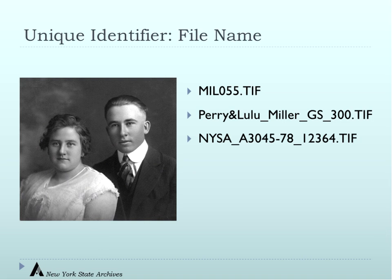Let's talk about naming your files. You need to come up with a unique identifier for your file names. A simple example: MIL-055.tif — MIL for Miller, the 55th image, saved as a TIFF. Another strategy includes identifying people in the name, along with the image type and resolution: for example, indicating it's a grayscale image scanned at 300 PPI. The New York State Archives would use a more complex professional-level file naming convention. Some people like to put the date in as well.